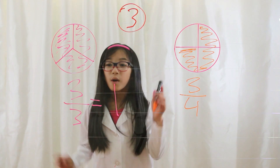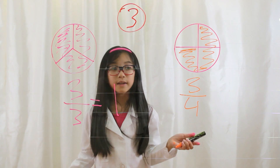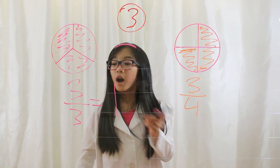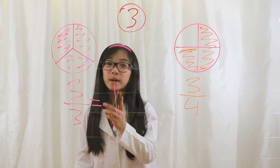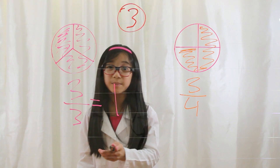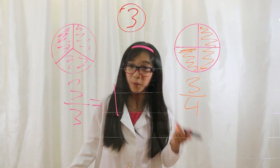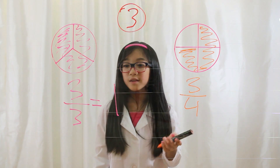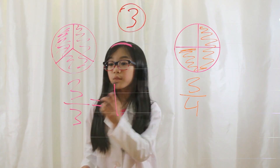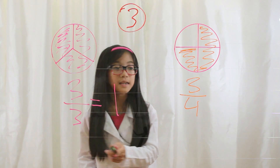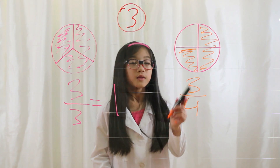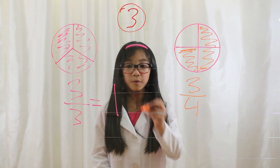Now, what do you notice? Well, obviously, one whole pie is bigger than just a portion, so therefore three out of three is bigger than three-fourths out of four.